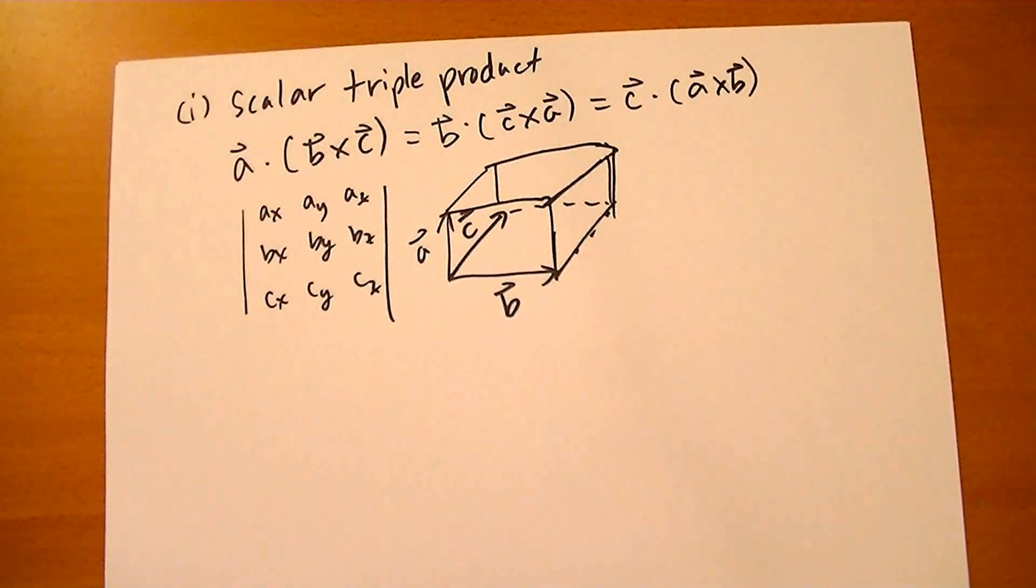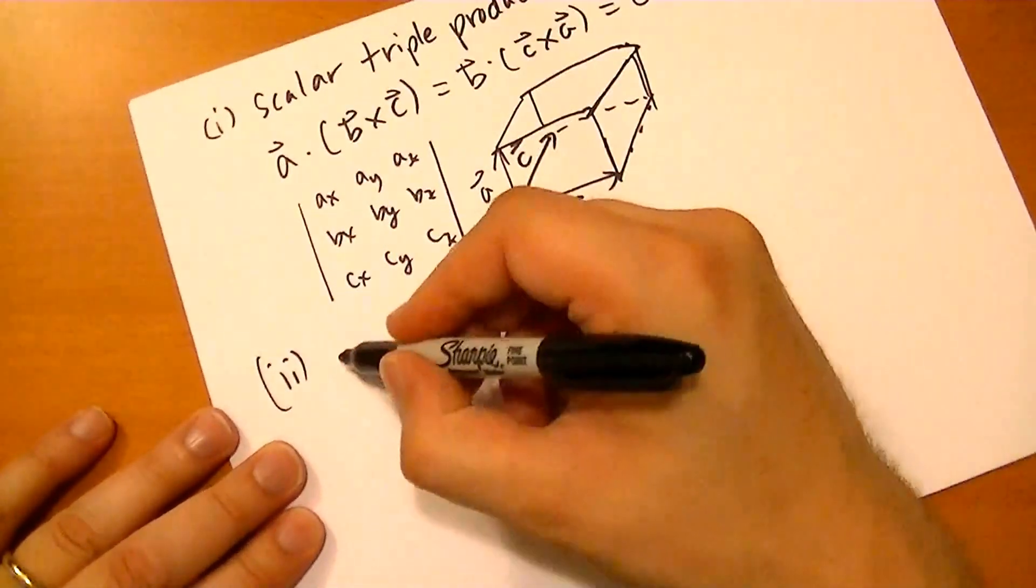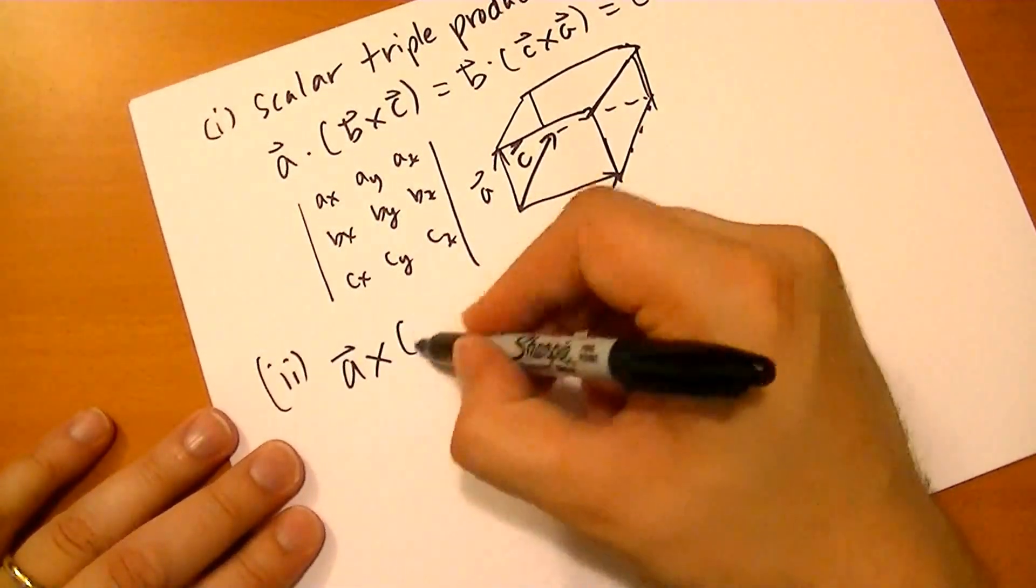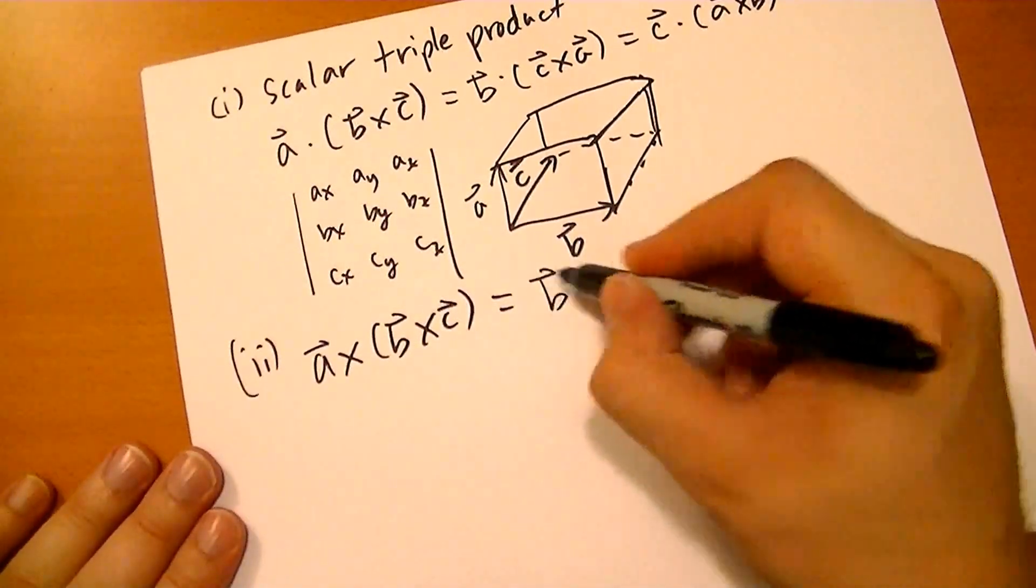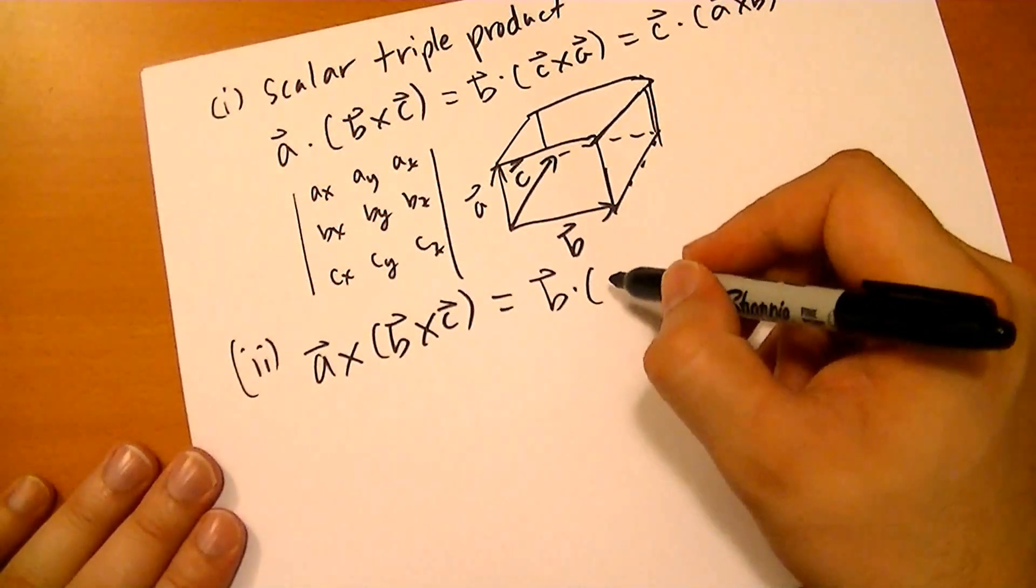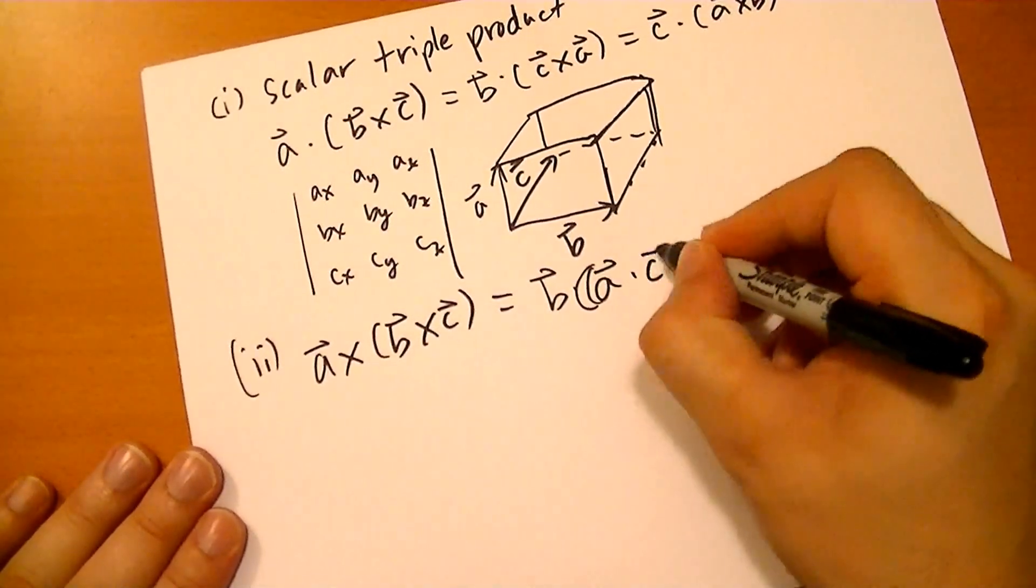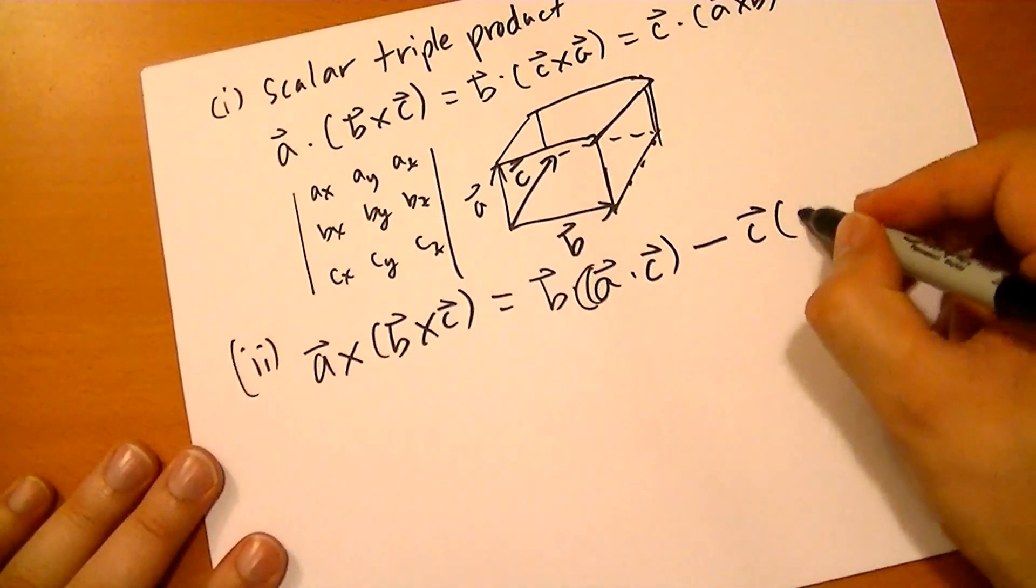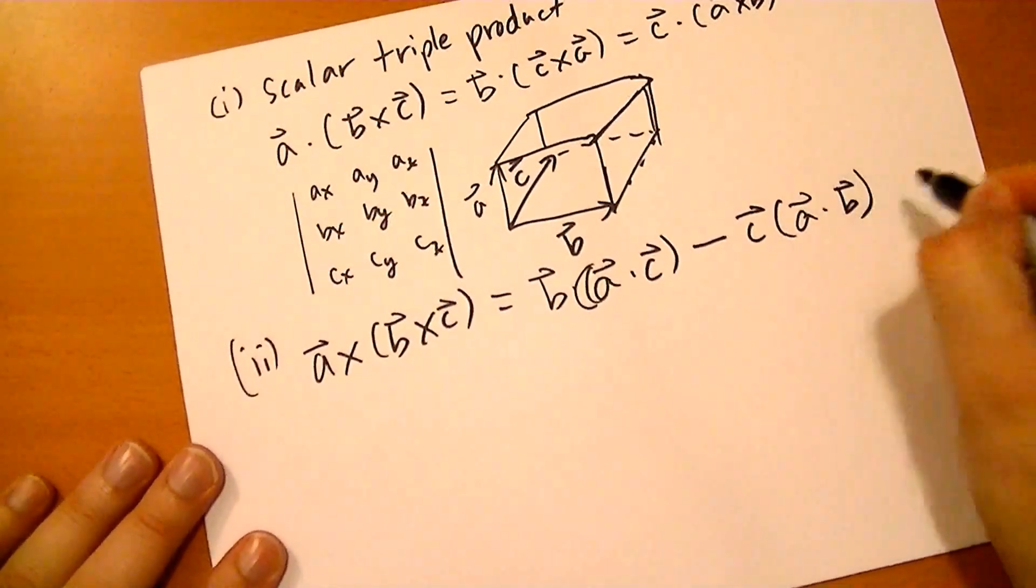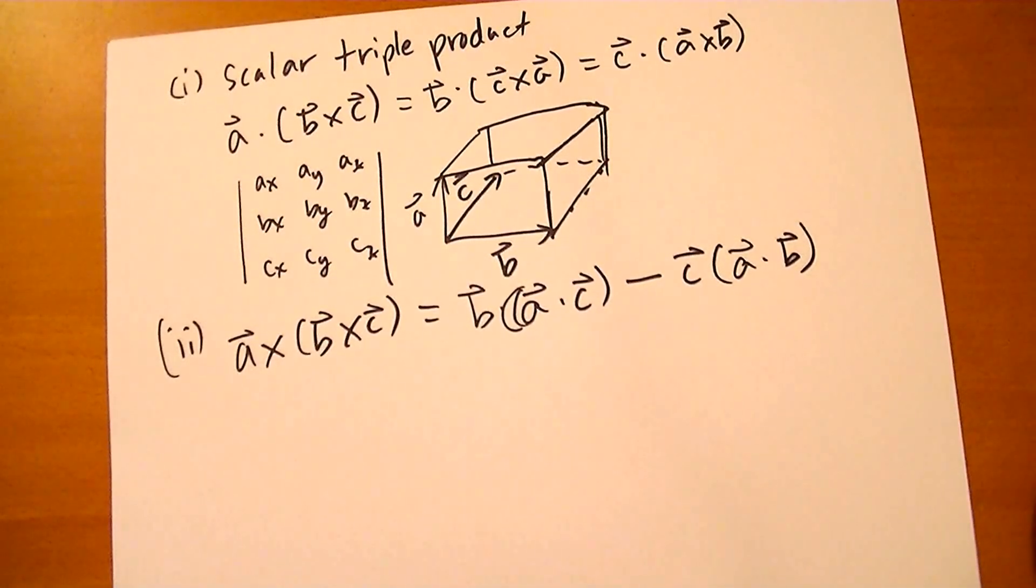So rather simple. The second triple product that's interesting is the triple cross product, and that follows the BAC-CAB rule. It's B times the quantity (A dot C) minus C times the quantity (A dot B). If you reverse the terms of this one, then obviously you're going to have a negative, so you have to switch the two terms, the BAC-CAB terms.